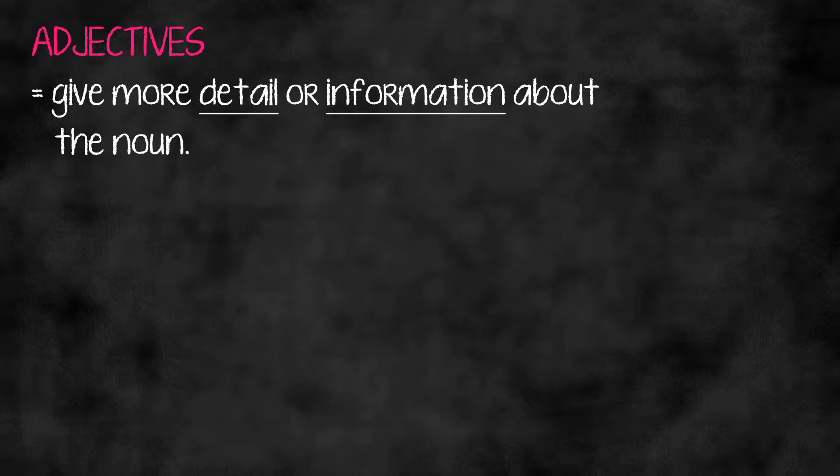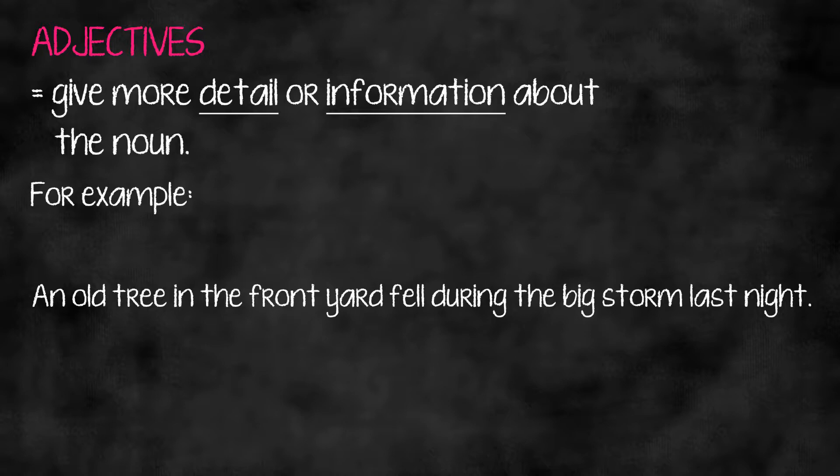Adjectives are the second type of modifier of nouns. They give more detail or information about the noun. For example: 'An old tree in the front yard fell during the big storm last night.' In this case, 'fell' is the verb — the action. Who or what fell? Not 'yard' — the tree fell. 'Tree' is our subject.